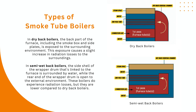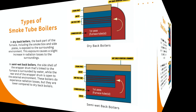Semi-wet back boilers have the side shell of the wrapper drum linked to the furnace surrounded by water, with the rear end open to the environment. They do experience radiation losses, but they are lower than in dry back boilers.